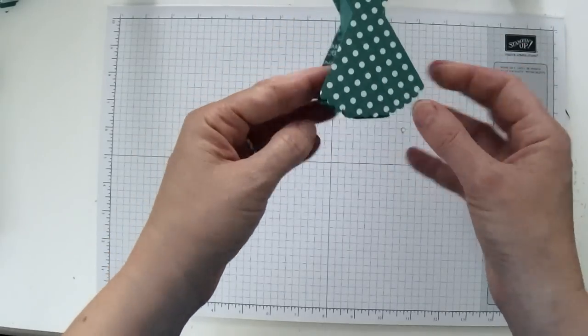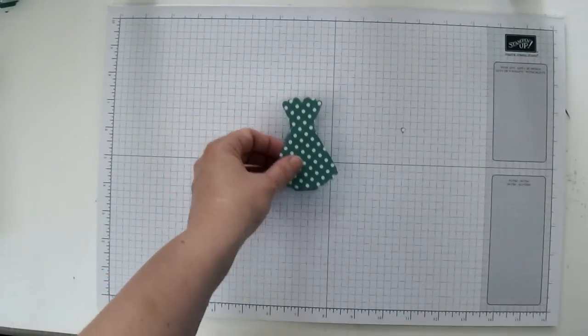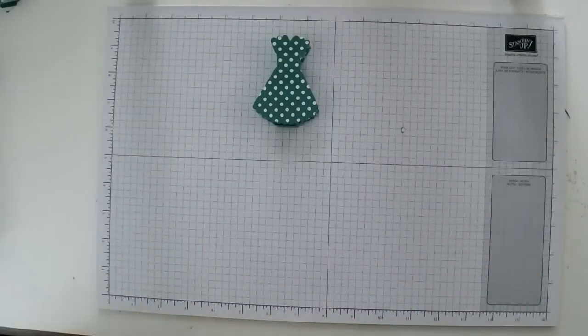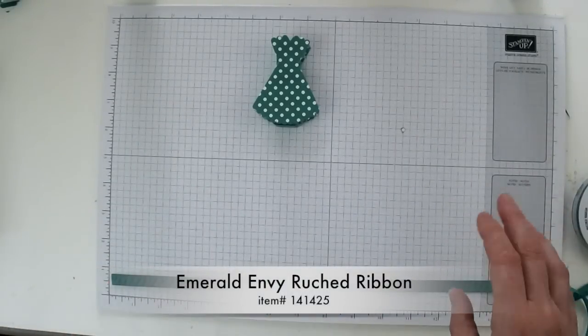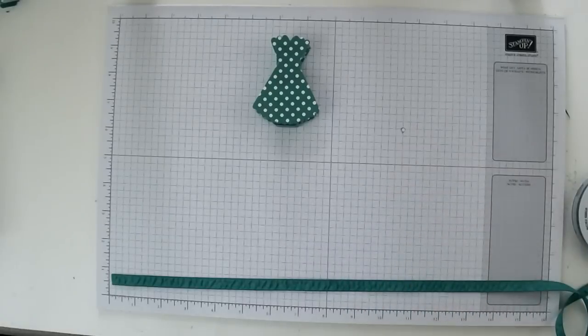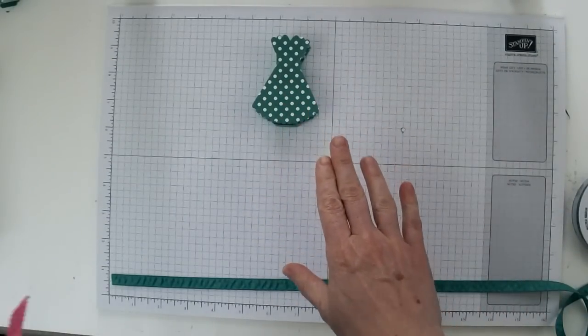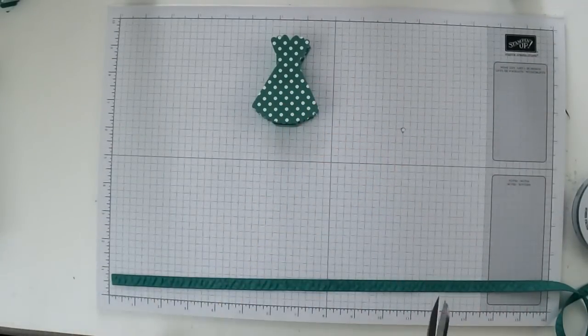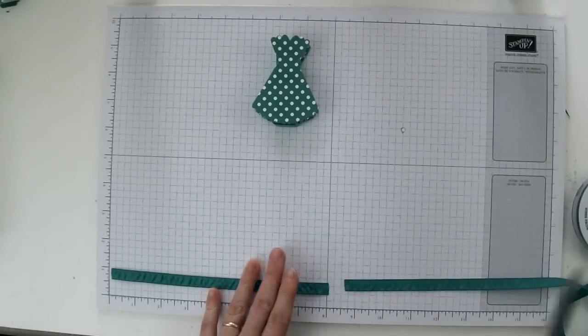Now you can decide which of the two sides you'd like better for the front. And I'm going to use that one for the front. And then we're going to need some of this Emerald Envy Ruched Ribbon. And I love that all of the 2016-2018 in colors have matching ruched ribbon. So you could actually make this dress in five different colors. I've made it in three different colors. So I'm going to cut about an 8 inch piece.